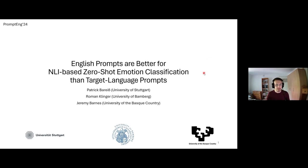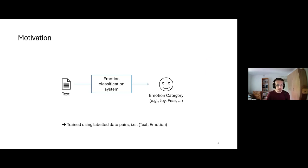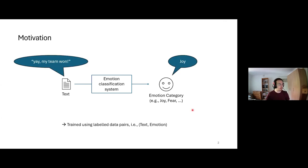Let's get started. What exactly do I mean by emotion classification? Well, it's quite simple: we want to take some piece of text and automatically find out which emotion is most closely associated with it. For instance, given the sentence 'Yay, my team won,' we would likely associate the emotion joy rather than fear or sadness.